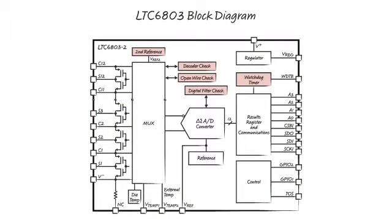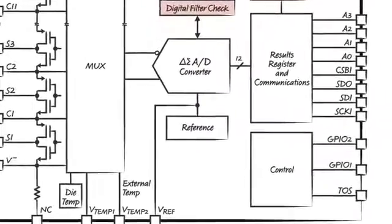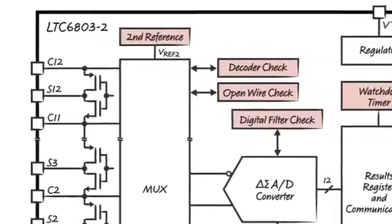Consider this block diagram. I have highlighted the self-diagnostic components. For example, there are two references on the IC. The primary reference used by the ADC and a second reference.